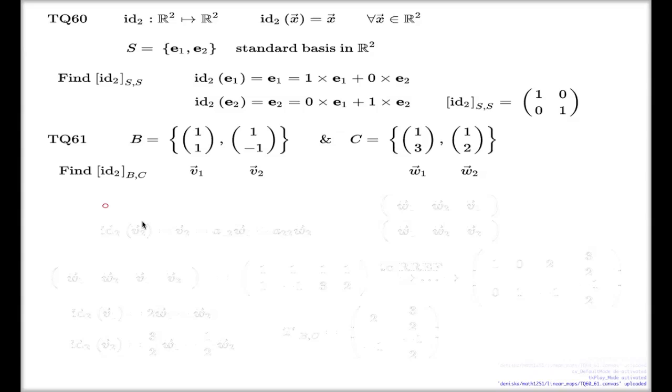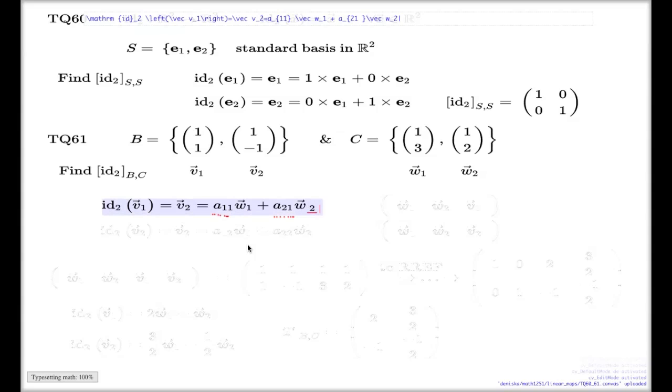Here's my symbolic expressions. I have to apply my identity to the first element of my B basis. This is an easy step; it's just v₁. Then I have to find these coefficients which ensures that this v₁ can be represented—we're dealing with four coefficients. That's why I indexed them in such a way: a₁₁ and a₂₁, which represent v₁ as a linear combination of w₁ and w₂.